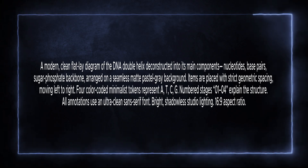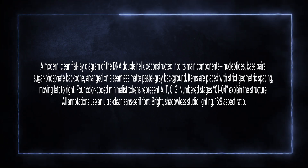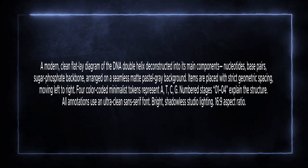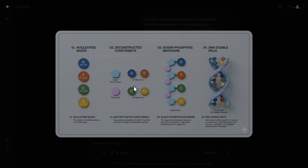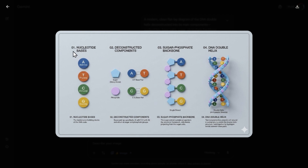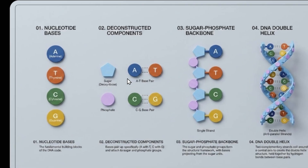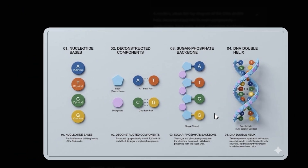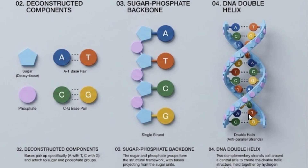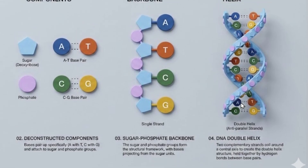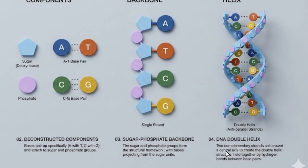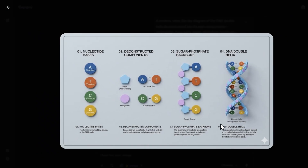One very complicated prompt: a modern, clean, flat-lay diagram of the DNA double helix deconstructed into its main components. And this is what we got - this is science ready for schools, for faculties, for everything. Nucleotide bases: adenine, thymine, cytosine, guanine. Deconstructed components. Look at all the words - even the small text is correct. And finally the DNA double helix. Two complementary strands coil around a central axis. I'm not a chemist or geneticist, but this sounds and looks pretty good. Amazing.